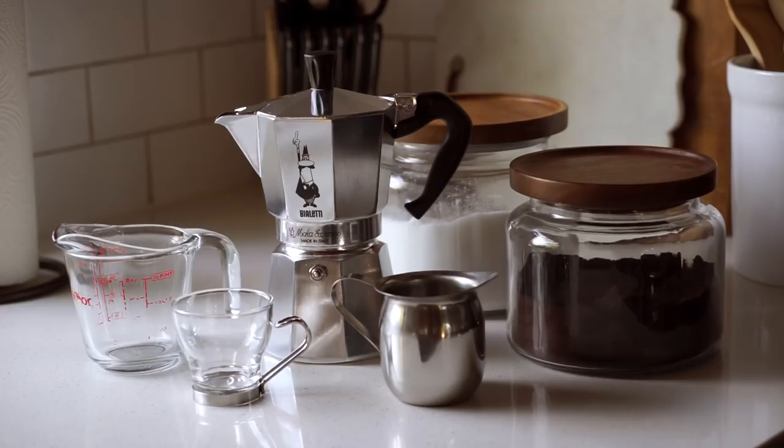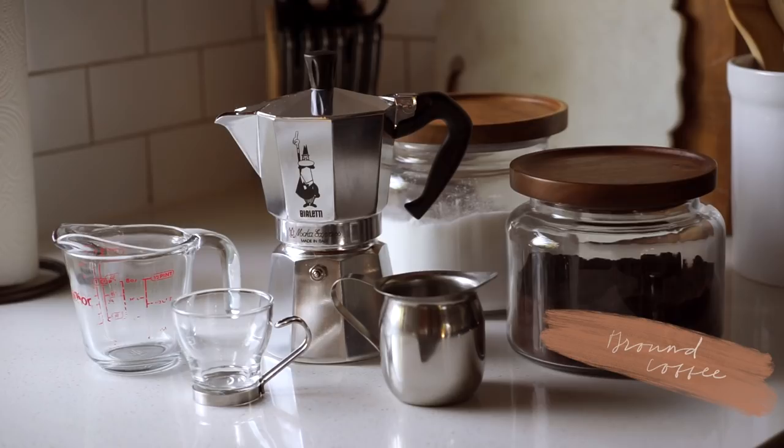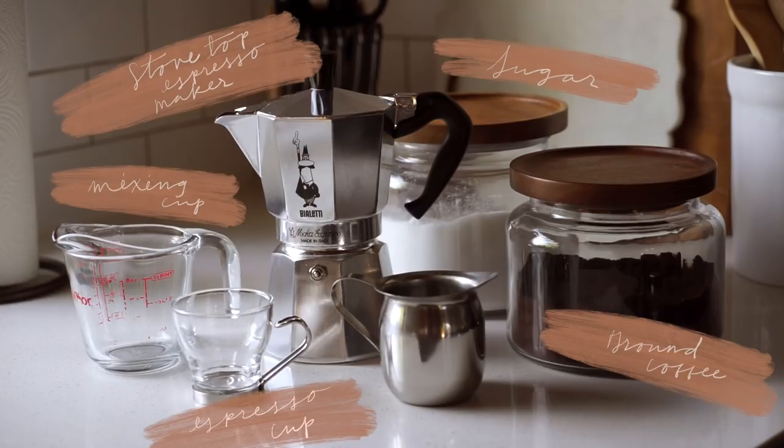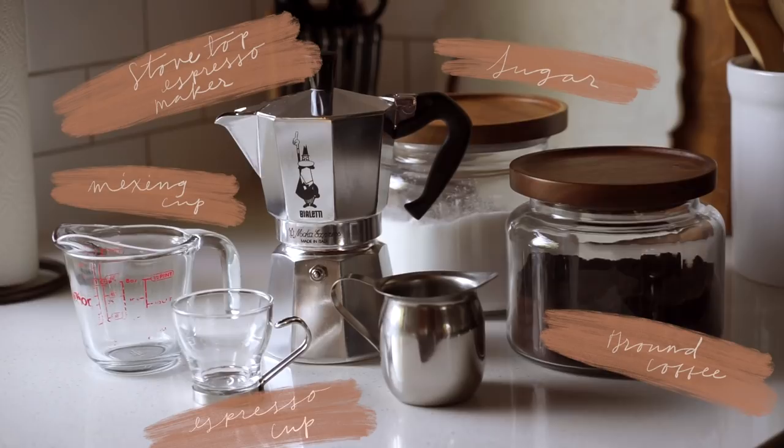This is what you're going to need: some ground coffee, some sugar, any espresso maker (I use a stovetop espresso maker), an espresso cup, a little cup to pour your coffee in, and finally something to mix your sugar and coffee in. Since this espresso maker makes a lot of coffee, I'm going to use a measuring cup instead of my little stainless steel one.